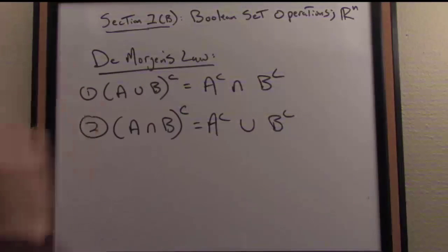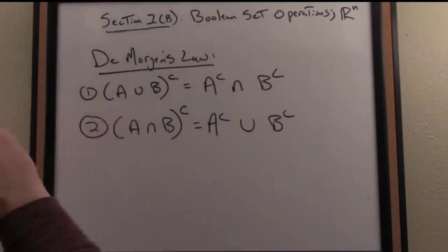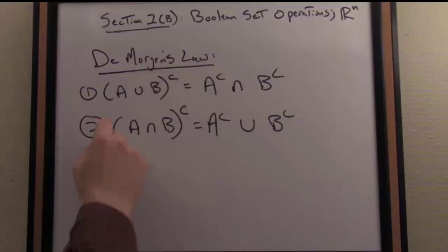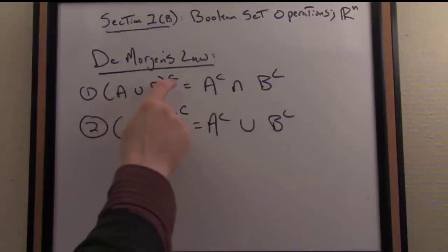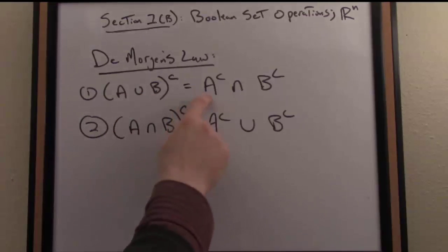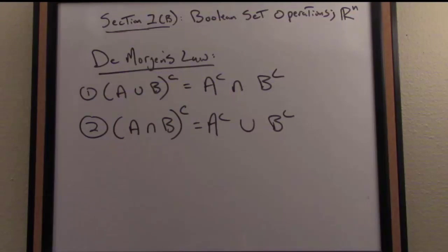So the complement works like this by De Morgan's Law. Well, that's going to say then that it's not raining and I'm not going to work. So let's say that one more time. The complement or the negation of it's raining or I'm going to work is it's not raining and I'm not going to work. So both events fail or both outcomes fail to transpire.